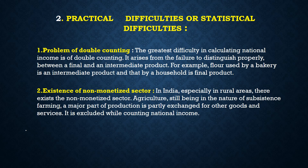Number 2: existence of non-monetized sector. In our economy, there are still many sectors which are non-monetized, where people work without money — especially in rural areas. Agriculture is still being carried out in the nature of subsistence farming. A major part of production is partially exchanged for other goods and services, and is excluded while counting national income.